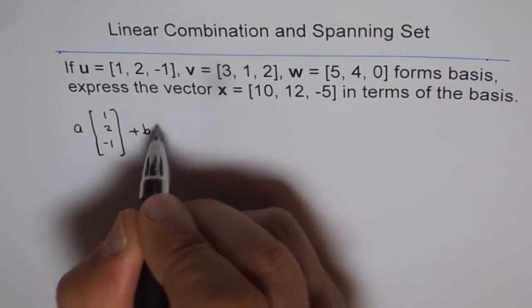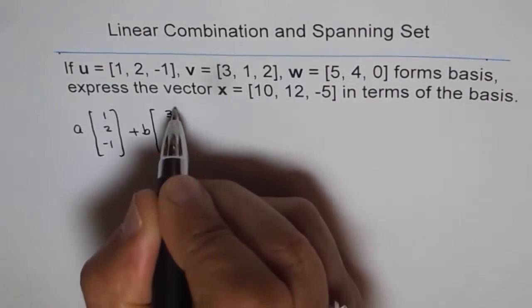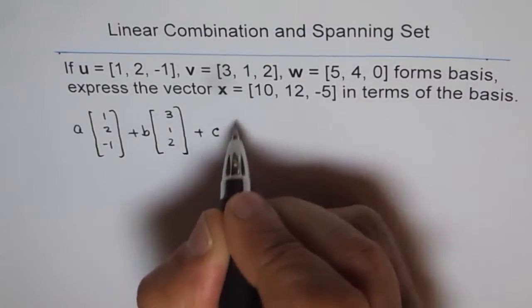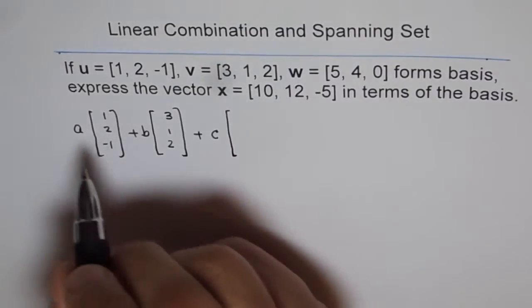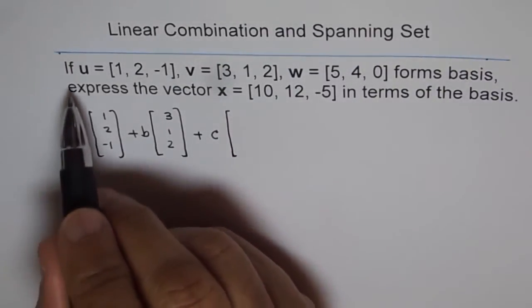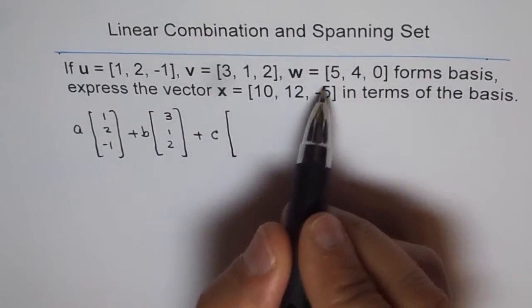And for this, we'll say b times vector v, which is 3, 1, 2, plus c times vector w. So I'm just writing the values. I'm not writing the first statement, which I should have. a, u, plus b, v, plus c, w, equals to x.